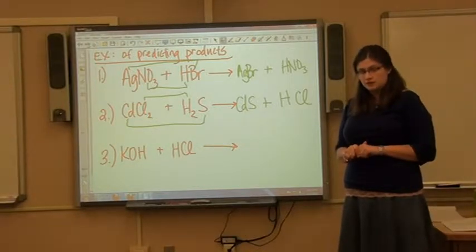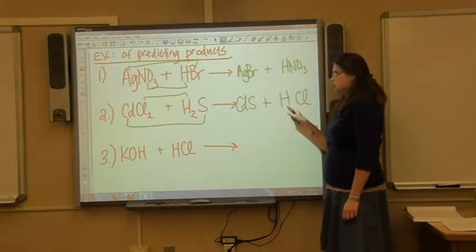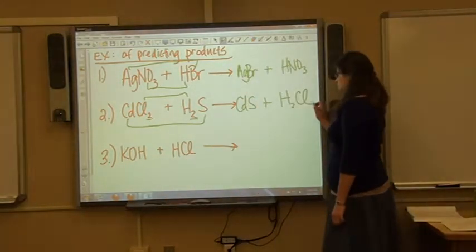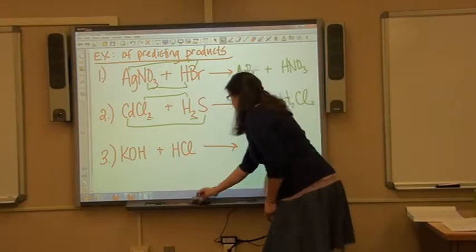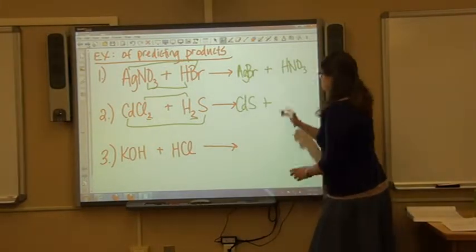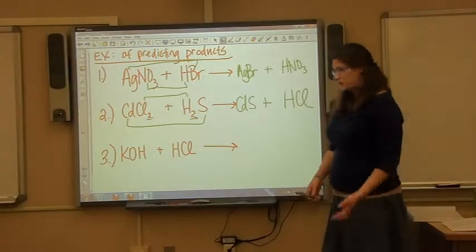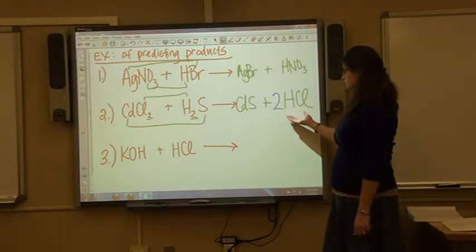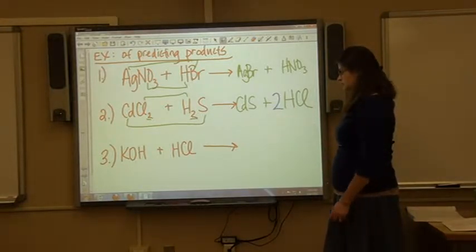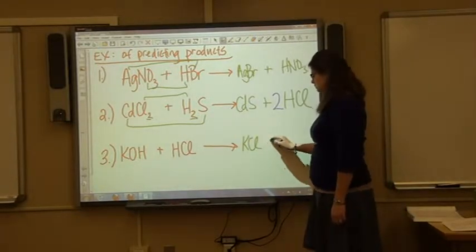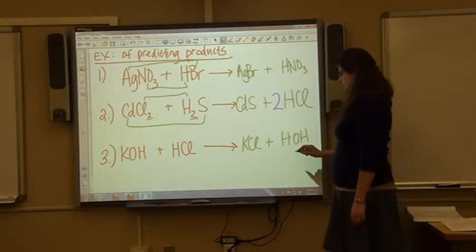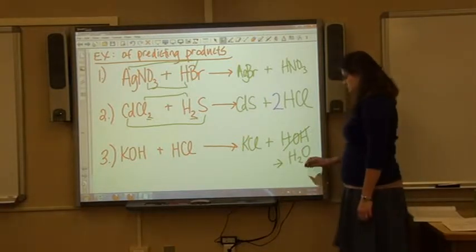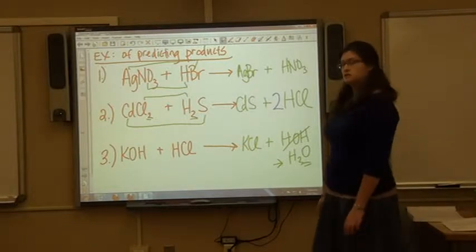When predicting products, you form compounds based on the standard charges of your elements. Just because you have a 2 here and a 2 there doesn't mean you put them inside the compound — that is improper. Instead, add a stoichiometric coefficient on the outside of the entire compound to balance. For the last problem, outside and inside gives us KCl and HOH, which is another way of writing H2O.